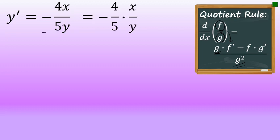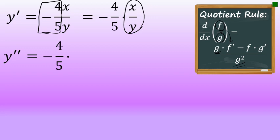In this problem, it'll be simpler if we take the constant multiple, negative 4 over 5, and leave that out front, then just apply the quotient rule to x over y. This is called the constant multiple rule of differentiation, and it will make this derivative a little easier. The negative 4 over 5 will remain in front, multiplied by the derivative of x over y as we compute this second derivative.